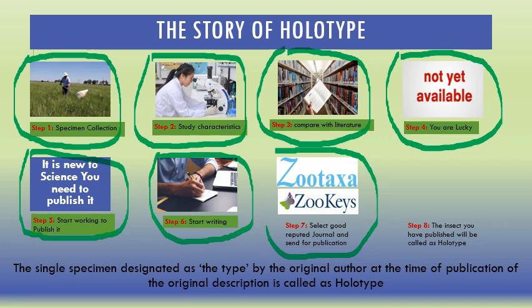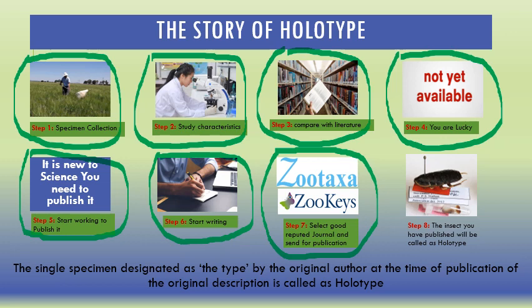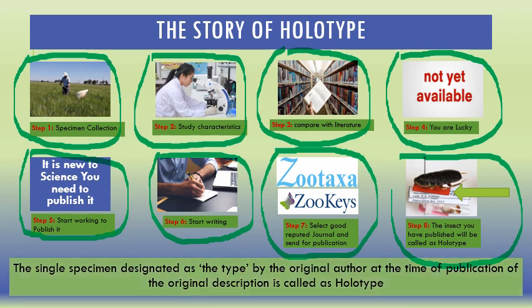Select a good, reputable journal such as Zootaxa, ZooSystema, ZooKeys, and so on. Finally, when you have written everything about your specimen — the male specimen — you give a red tag to that specimen, and this specimen for its whole life will be called a holotype.